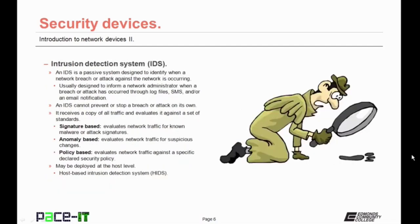Then there is the intrusion detection system, the IDS. An IDS is a passive system designed to identify when a network breach or attack against the network is occurring. They are usually designed to inform a network administrator when a breach or attack has occurred through log files, text messages, and/or email notifications. An IDS cannot prevent or stop a breach or attack on its own. The IDS receives a copy of all traffic and evaluates it against a set of standards.